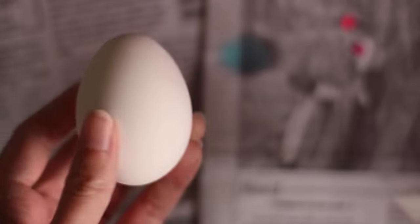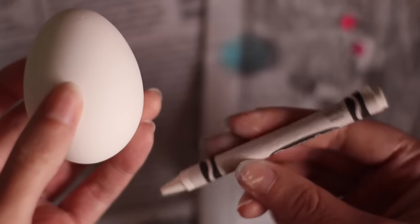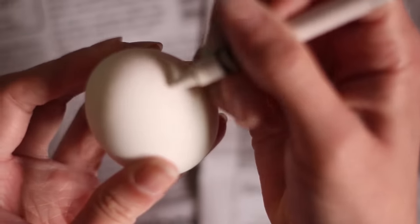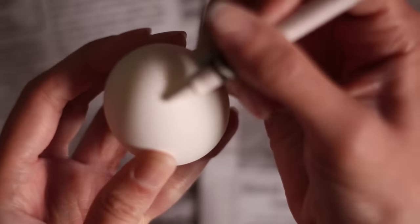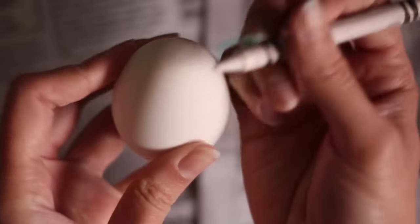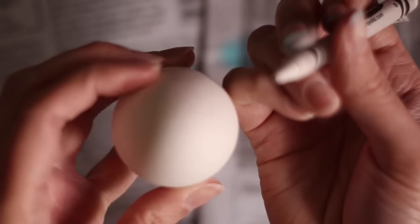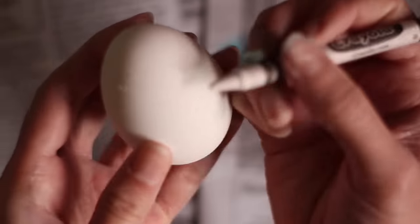For the first one you'll just need a white crayon. You can draw a design all over the egg or you could choose to write someone's name or an initial. I chose to do kind of a swirl pattern all over the egg.